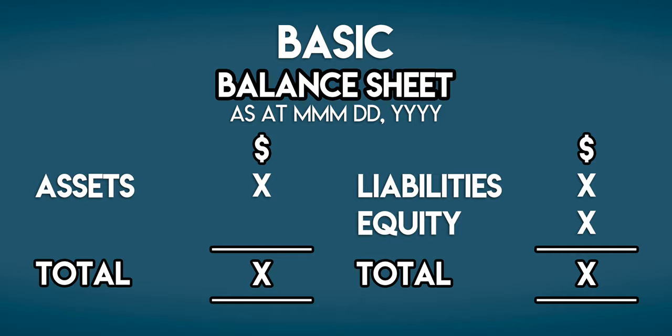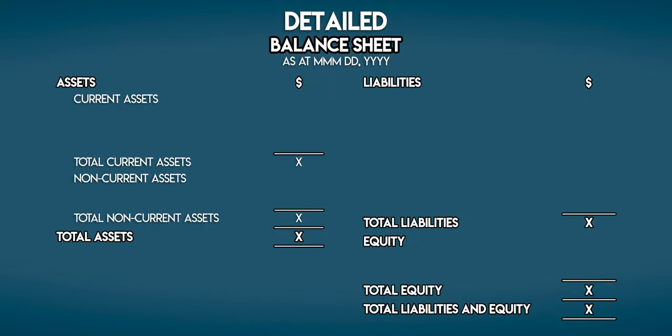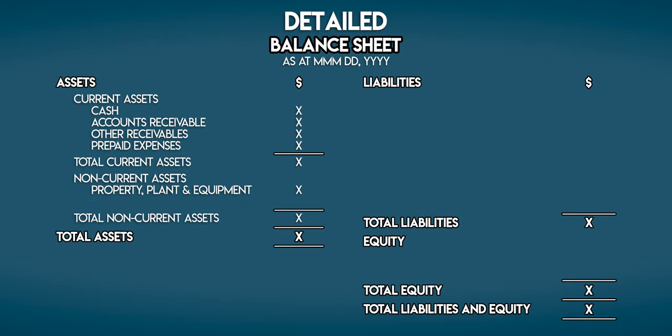A detailed balance sheet will look something like this. We expand out assets into current and non-current. Current assets are short-term assets, things like receivables and prepaid expenses. On the other hand, non-current assets are long-term assets. There are two main types: the ones that you can touch and the ones that you can't touch.